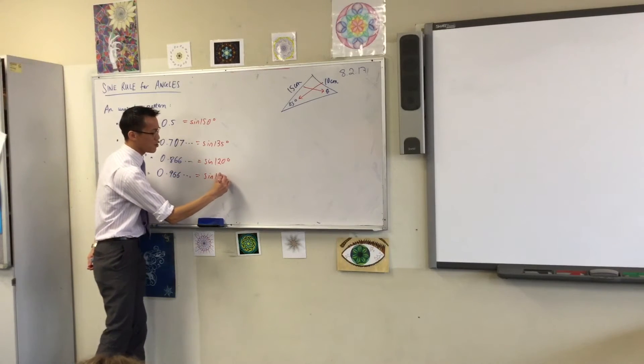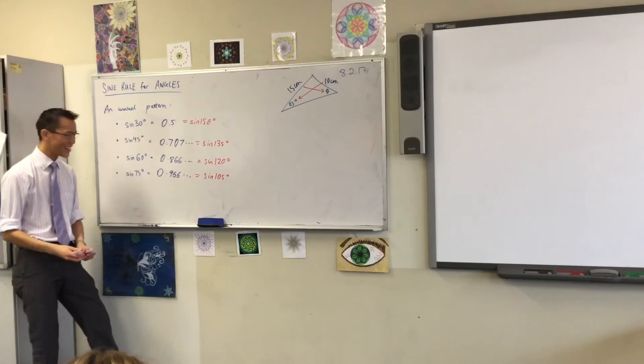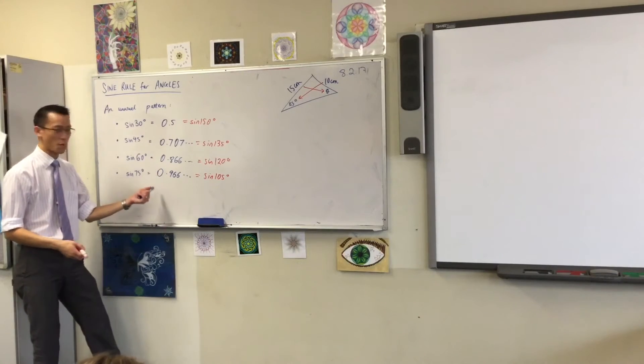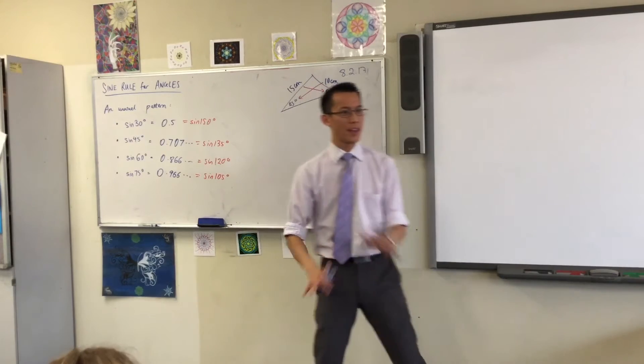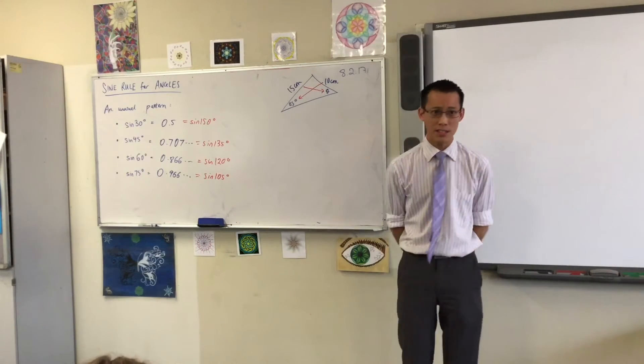Sine 105, you should find, weirdly, is exactly the same. 0.966 whatever. It's the same as 75 degrees. Now, by now, hopefully you can see a bit of a pattern.